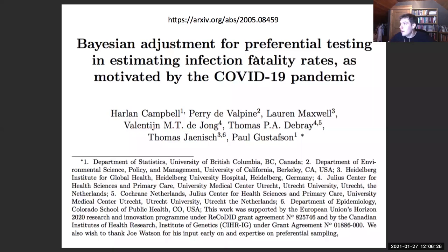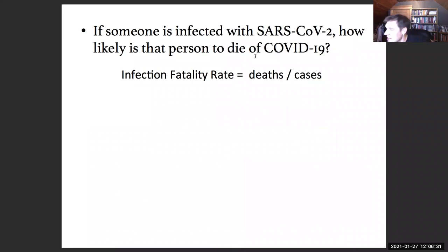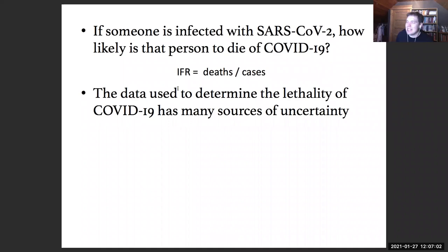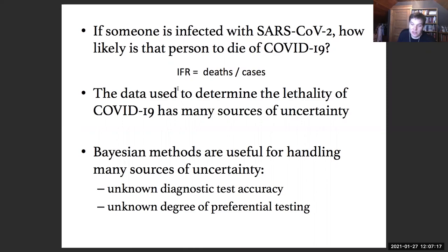The question at hand is a rather simple one: if someone is infected with SARS-CoV-2, how likely is that person to die of COVID-19? We answer this by looking at the infection fatality rate — a simple ratio of the number of deaths over the number of infections. What I want to convey is that it's a simple question but very difficult to answer, because the data has many different sources of uncertainty. Bayesian methods are particularly useful for handling and propagating that uncertainty, especially to deal with unknown diagnostic test accuracy and an unknown degree of preferential testing.